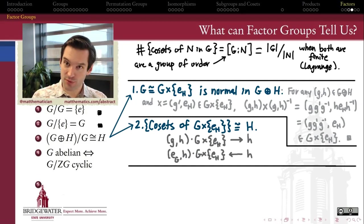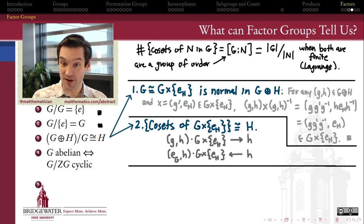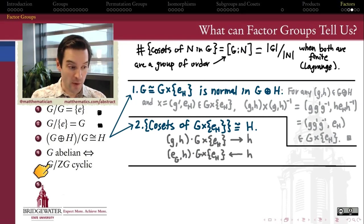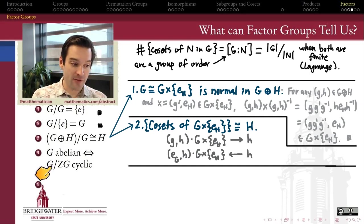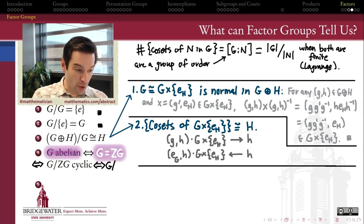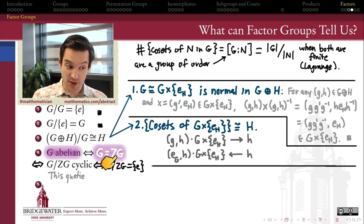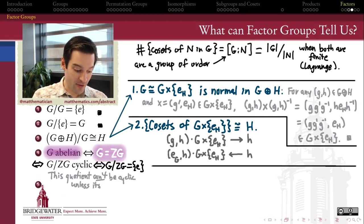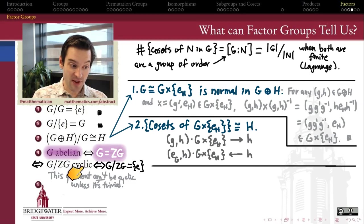You can convince yourself of that pretty quickly by remembering that the elements in the center Z(G) commute with everything in G, so the left cosets are going to be the same as the right cosets just because of that commutativity. Since the center of G is a normal subgroup of G, we can form the factor group G mod Z(G). This theorem says that the only way for that factor group to be cyclic is for the original group to have been abelian — because a group which is abelian is equal to its own center, and therefore the quotient G mod Z(G) cannot be cyclic unless it's trivial.